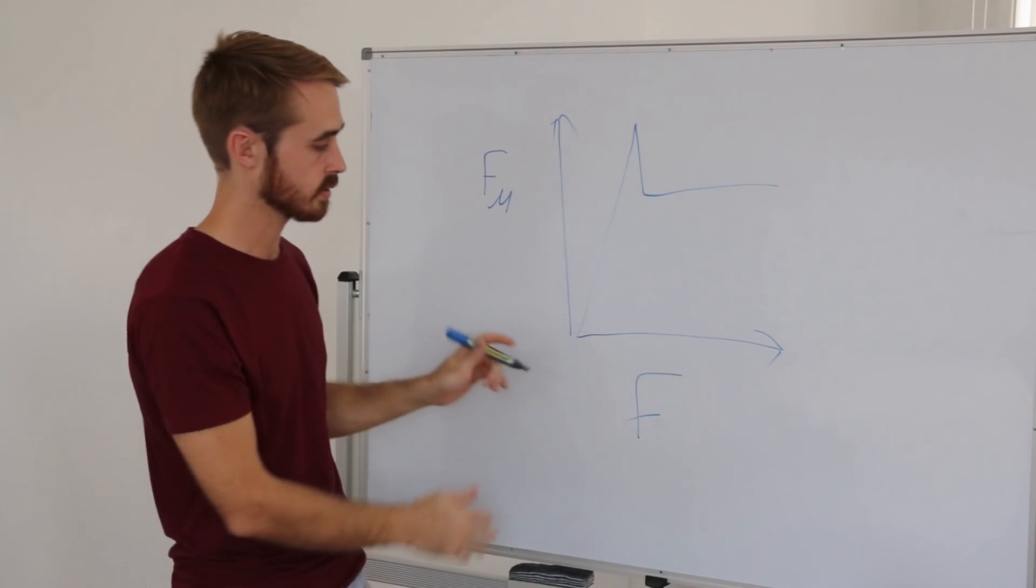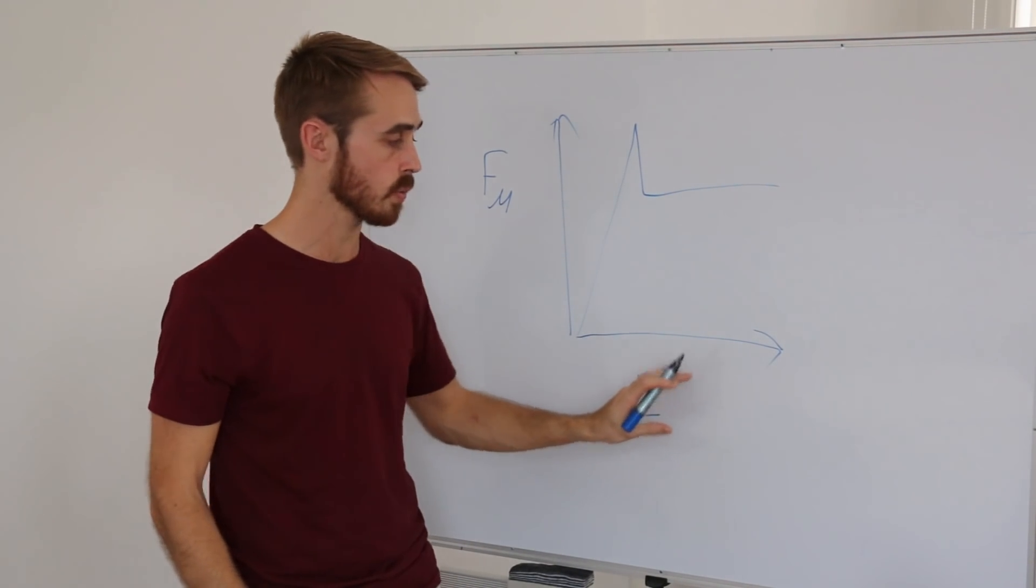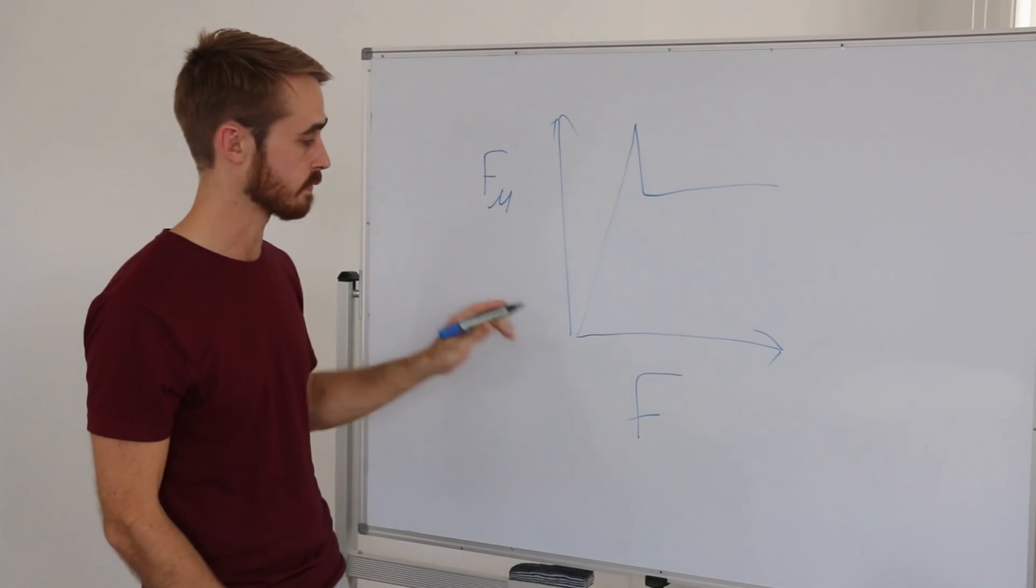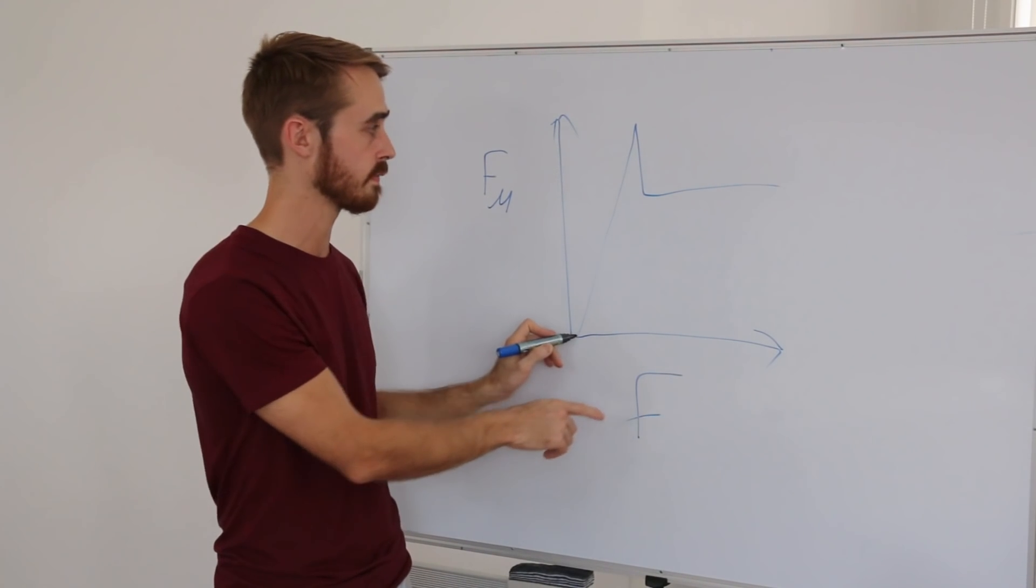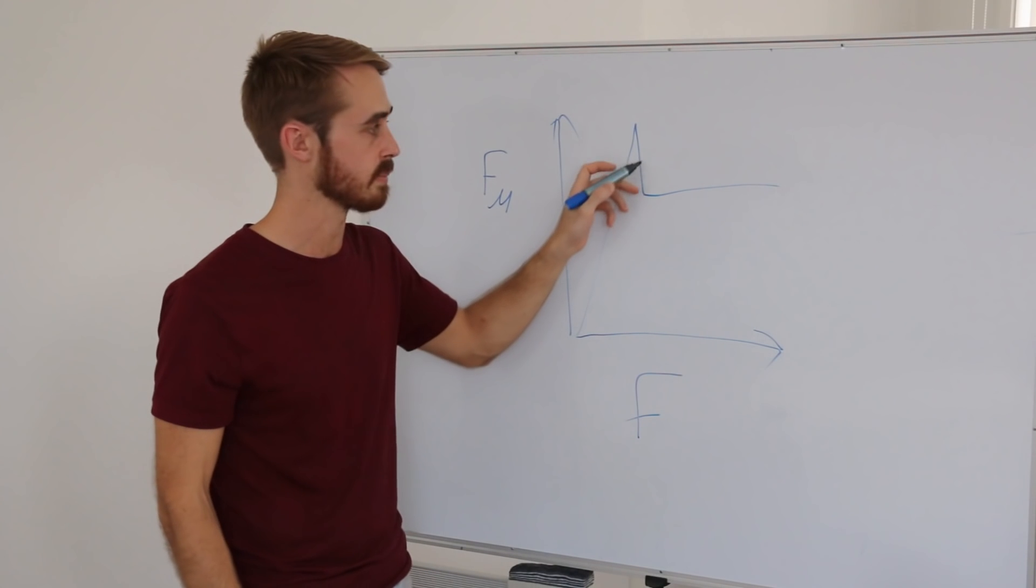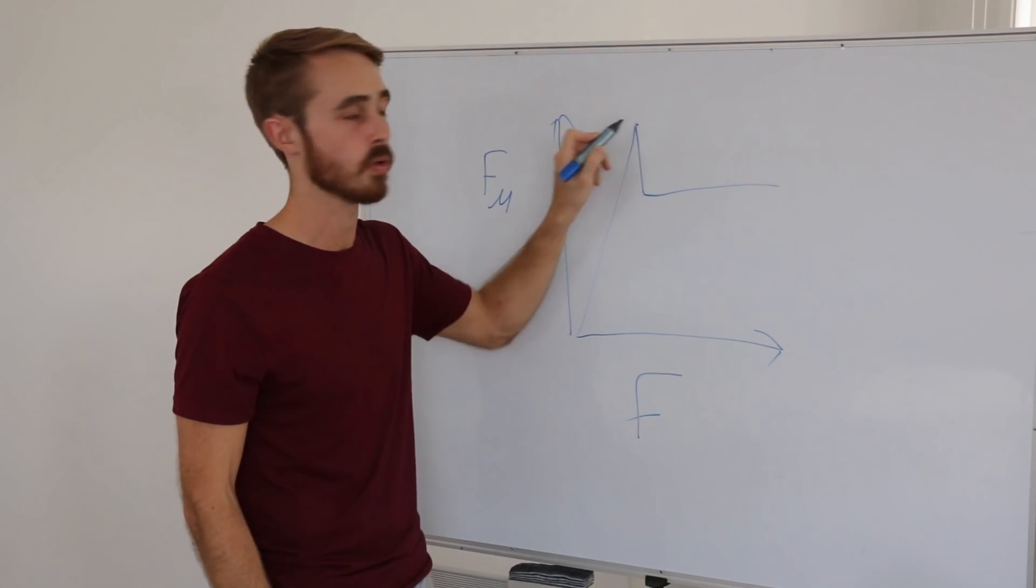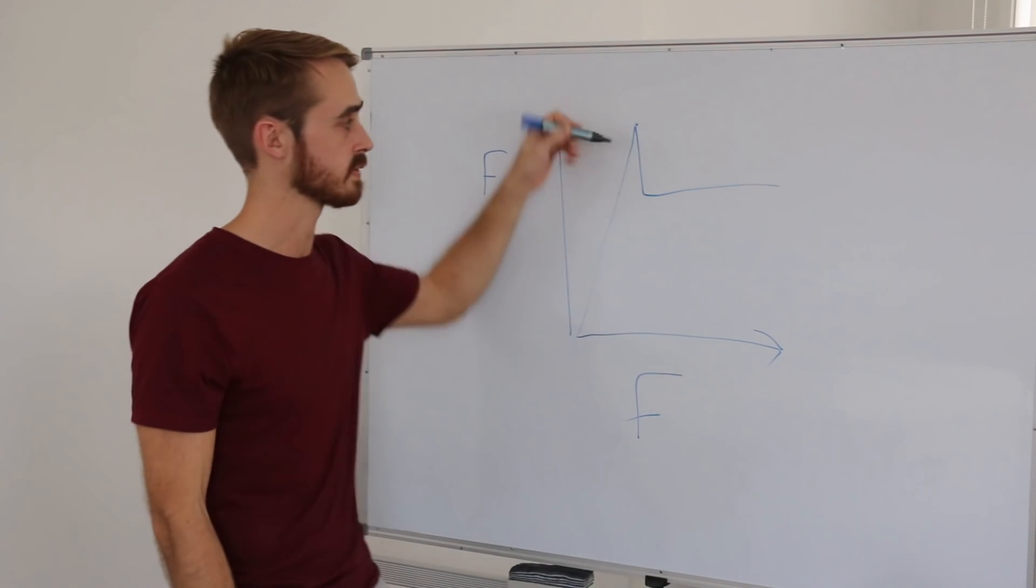We can see that in this graph. If we have a force that we're applying here, and this is the frictional force, as we apply a force, the friction force will rise to match. But eventually it will reach this point where we exceed the coefficient of static friction.